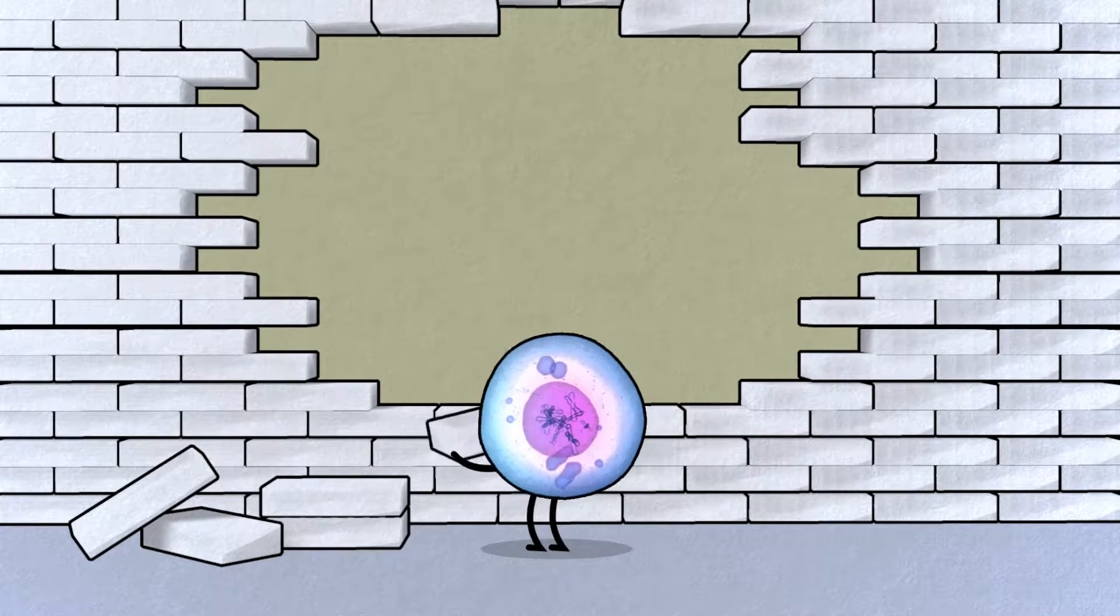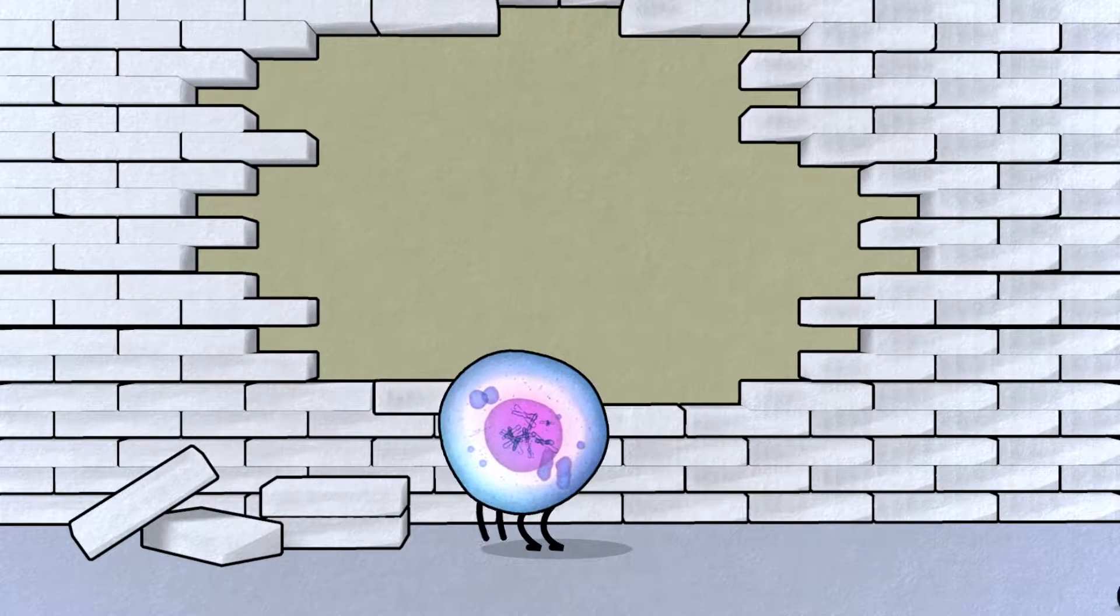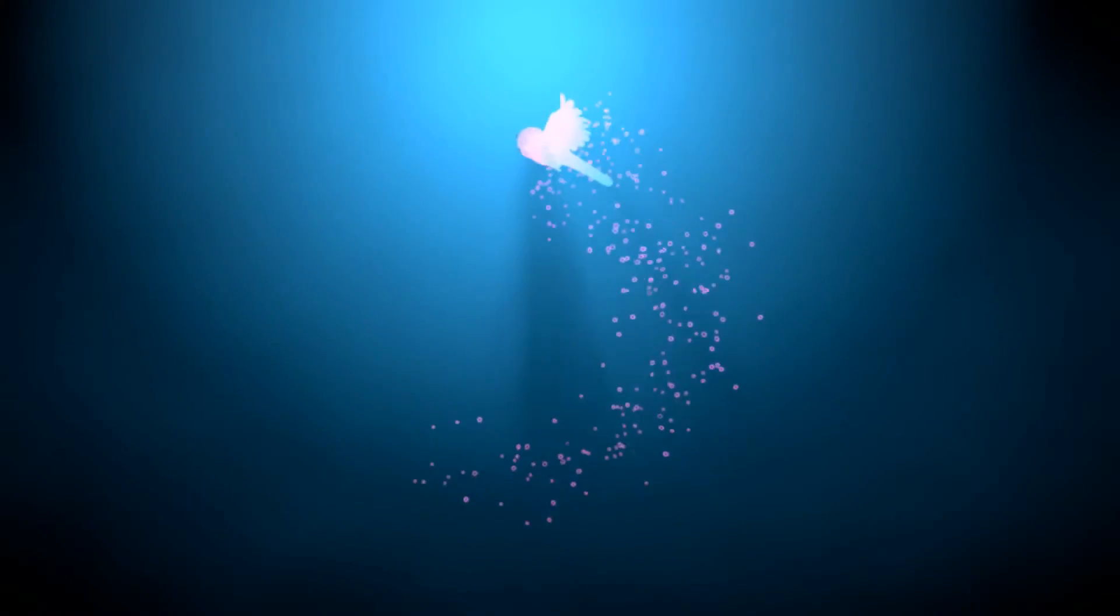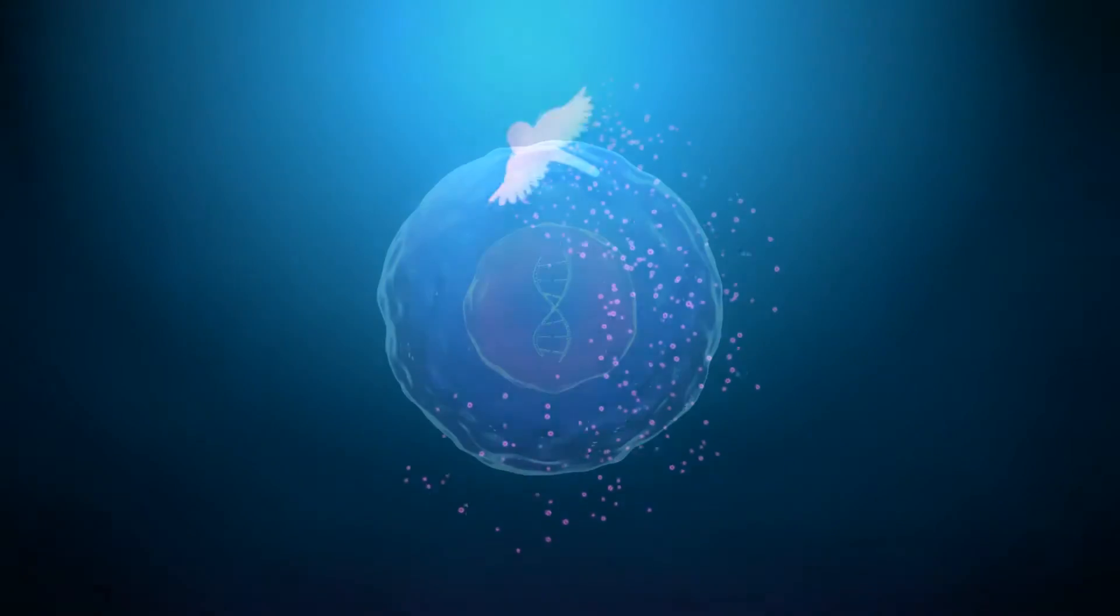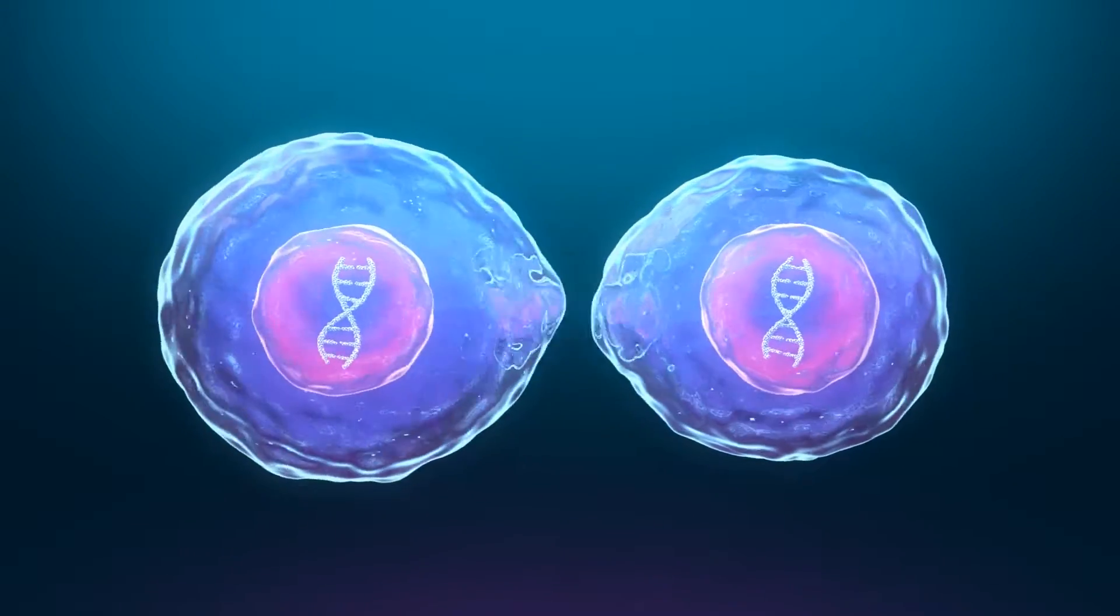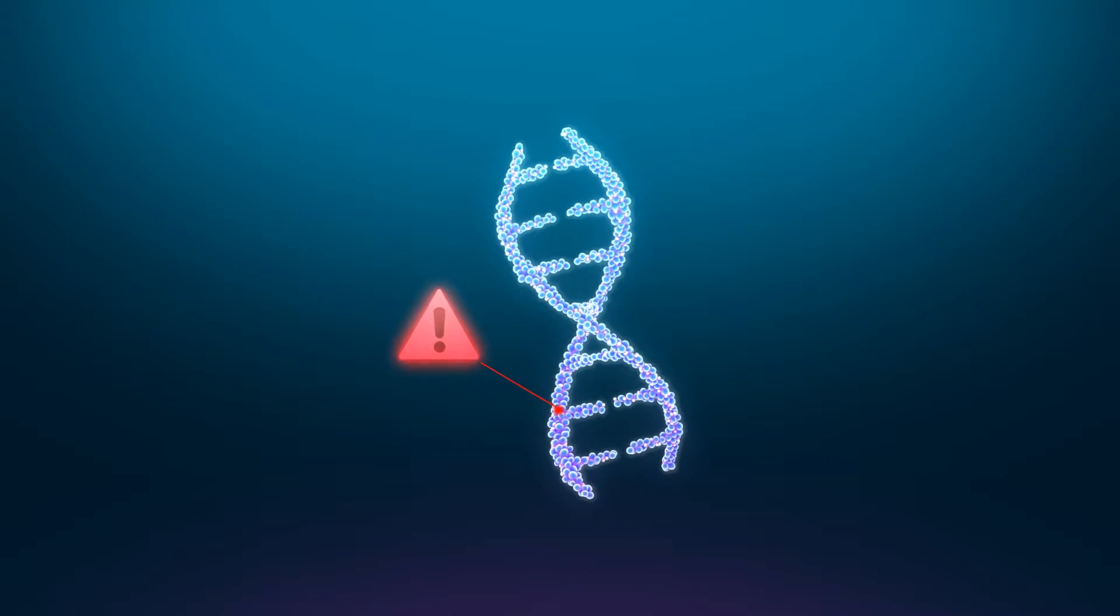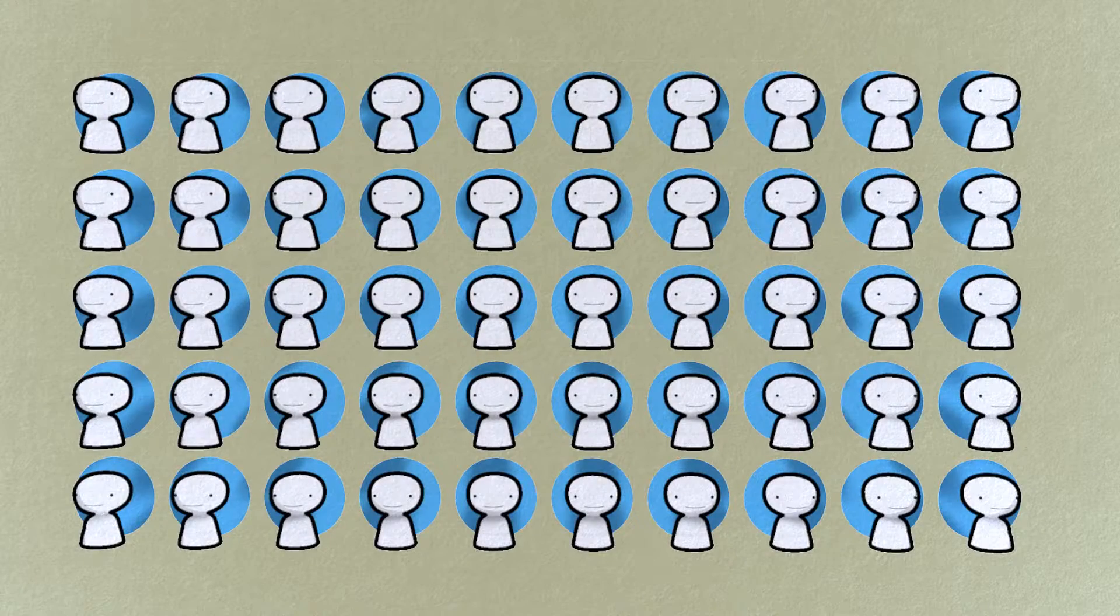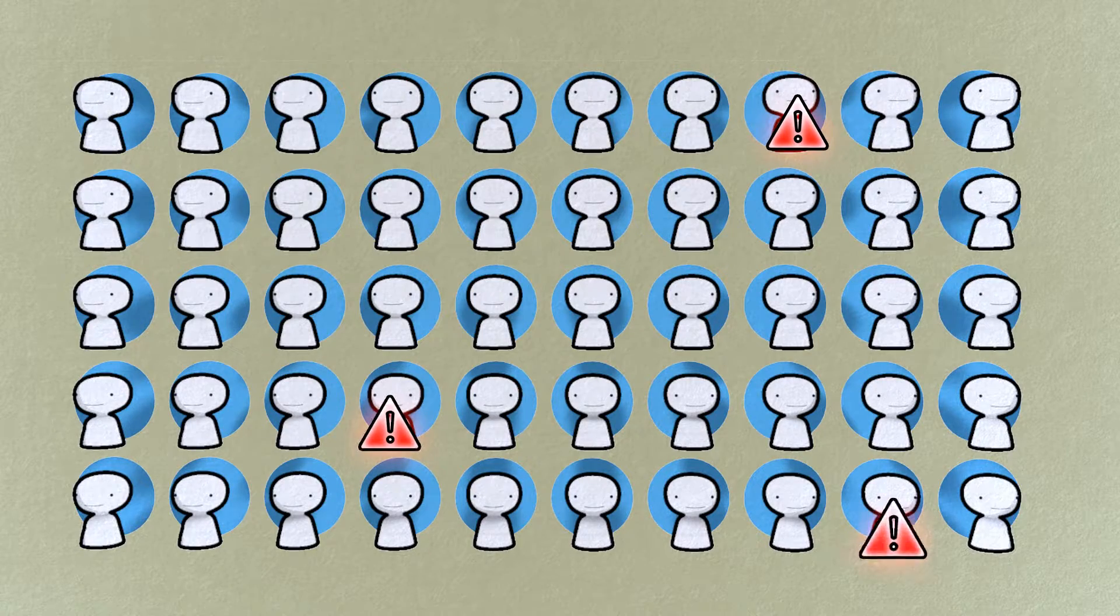How could stem cells age? As stem cells divide very often during the lifetime of an organism, they need to replicate their DNA and pass this on to their two daughter cells. Damaged DNA is therefore bad for stem cells. Patients that suffer from diseases that result in increased levels of DNA damage typically have problems with regenerating tissues and age prematurely.